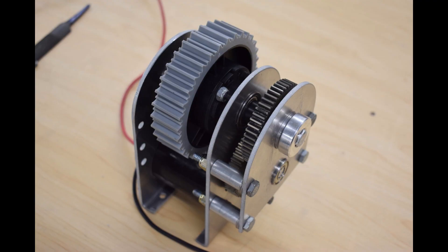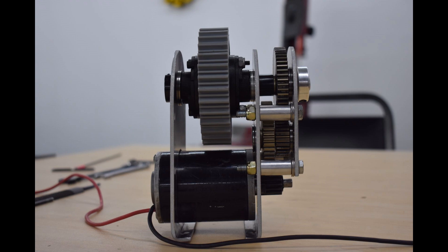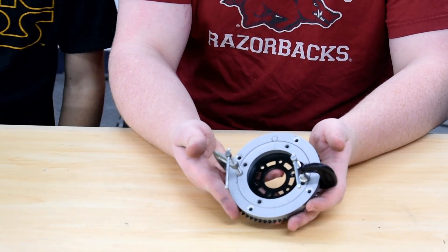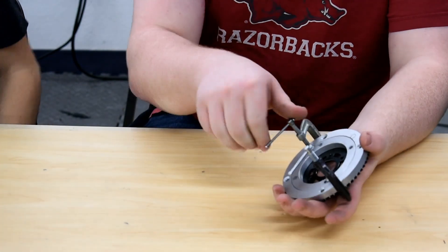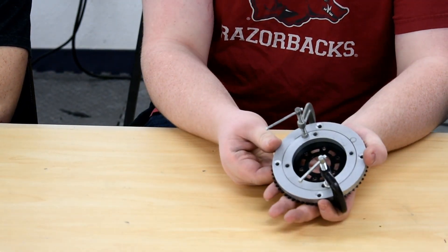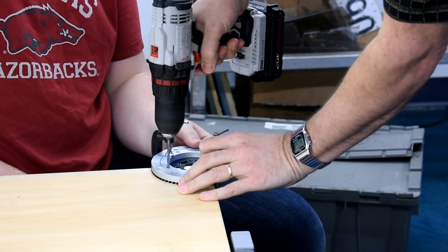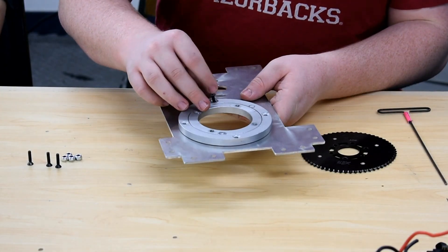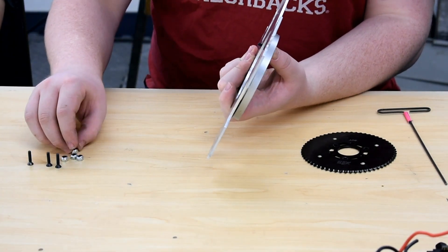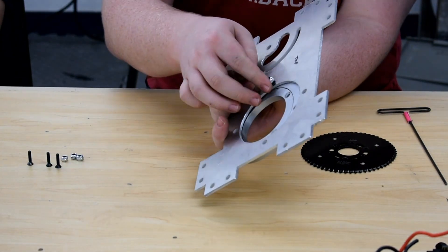Now drill holes in a 60 tooth sprocket. This can be done using a lazy susan as a template or use the one on our webpage. It must be very accurate so be careful. Use 3/4 inch countersunk screws to fasten the lazy susan to the top plate. Be sure to use lock nuts and tighten well.